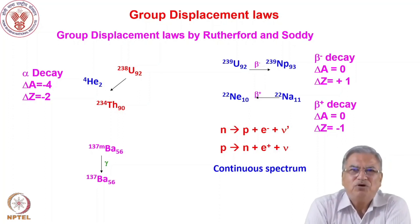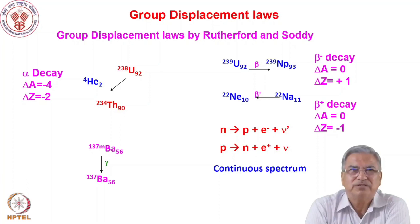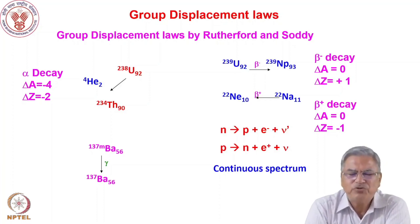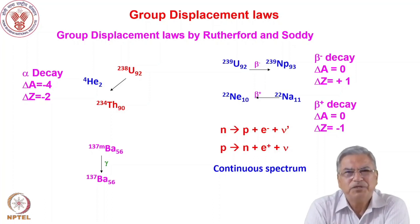Immediately after the discovery of radioactivity, Rutherford's group at Manchester became very active, and he along with Soddy formulated the laws governing radioactive decay. The prominent decay modes are alpha decay and beta decay. In alpha decay, a doubly charged helium nucleus is emitted from the parent isotope — for example, uranium-238. The mass number decreases by 4 and the atomic number decreases by 2, so uranium-238 becomes thorium-234.